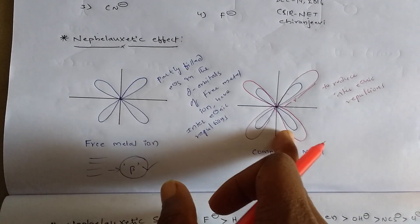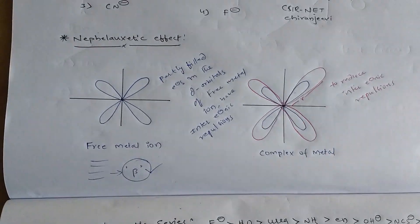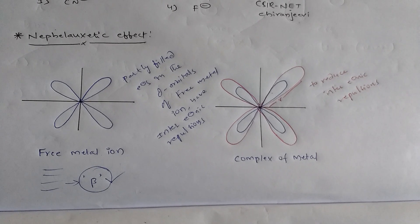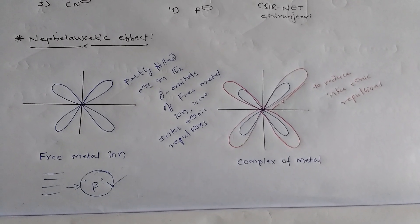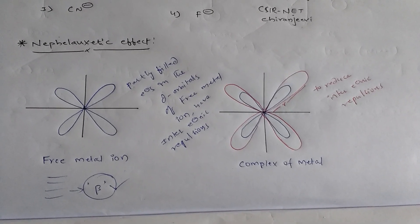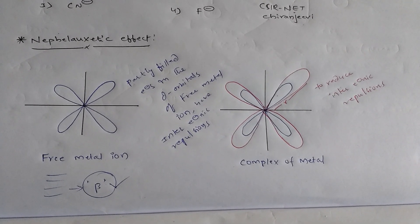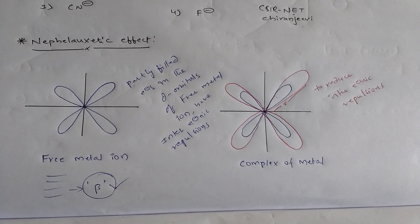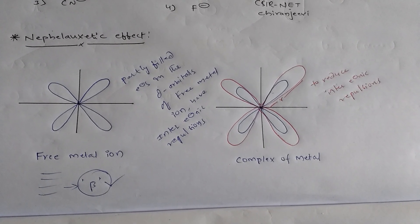It is made possible by the incoming ligand. Simply put, the nephelaxitic effect is: when we compare with the free metal ion, the metal ion in the complex has larger d-orbital lobes. That means the expansion of d-orbital lobes is observed in the metal complex — this expansion is simply called the nephelaxitic effect.